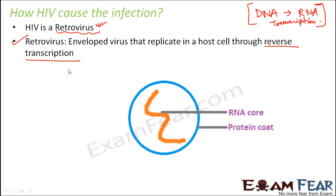Once the retrovirus enters inside a host cell, the RNA forms DNA — just the opposite of normal transcription. This process is reverse transcription: DNA is synthesized from RNA. Then from that DNA, more RNAs are created and that is how the virus multiplies inside the host cell.